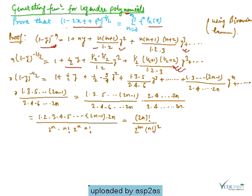So we have (1 - y)^(-1/2) = 1 + (1/2)y + (1·3)/(2·4) · y² + (1·3·5)/(2·4·6) · y³ + ... + (1·3·5···(2n-1))/(2·4·6···2n) · y^n + ...